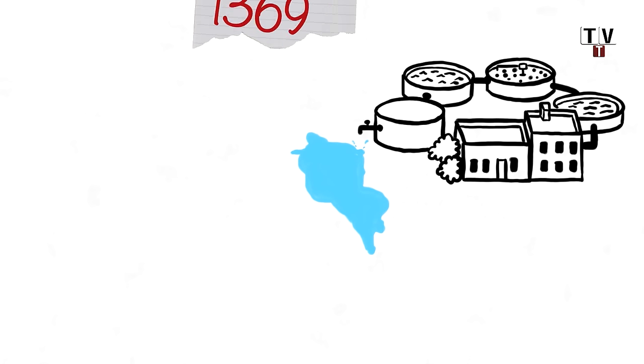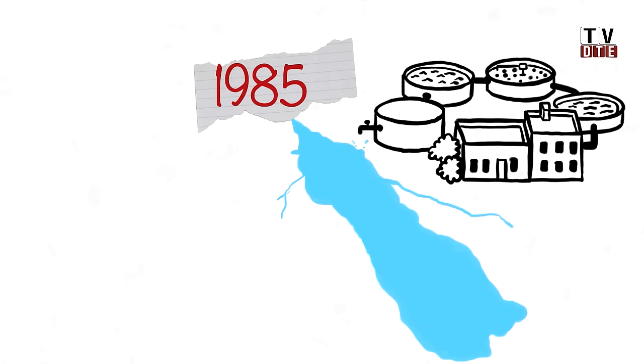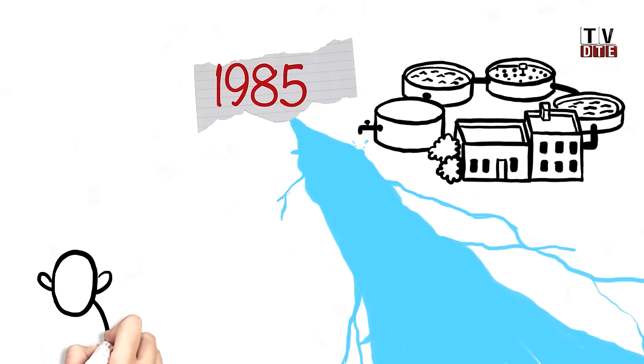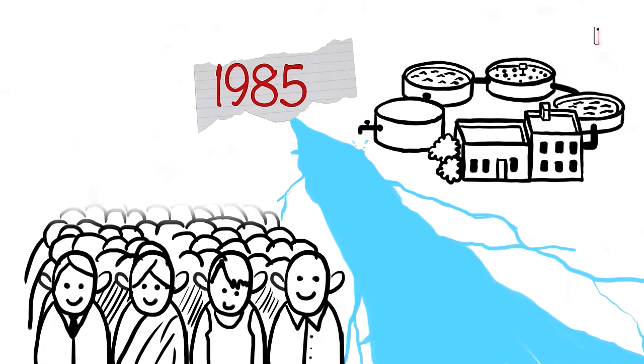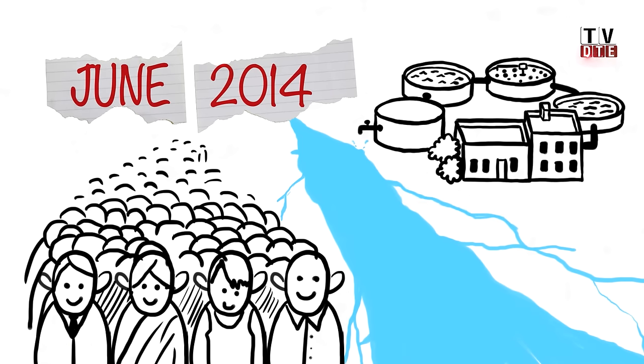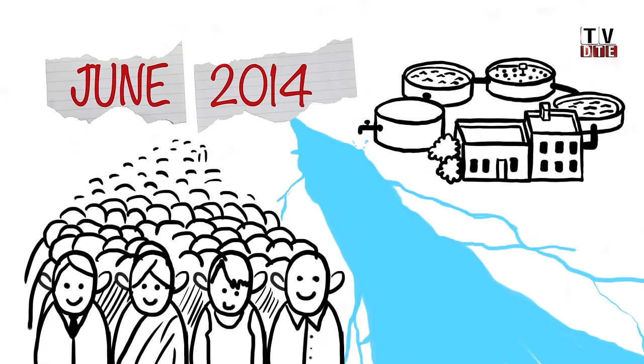So between 1985 and till Namami Ganga was launched, the government went about setting these plants in urban centres with population of 100,000 and above. Till June 2014, a total treatment capacity of 1,208 million litres per day had been created, but they failed to provide any succor to the river's water quality.